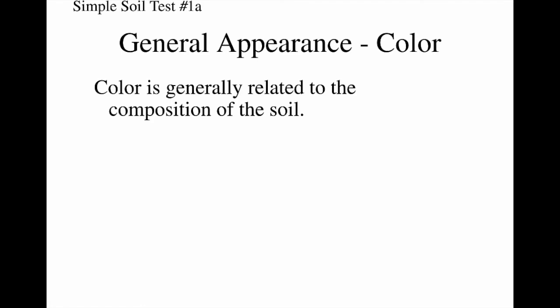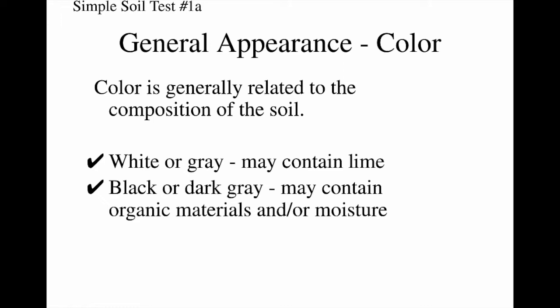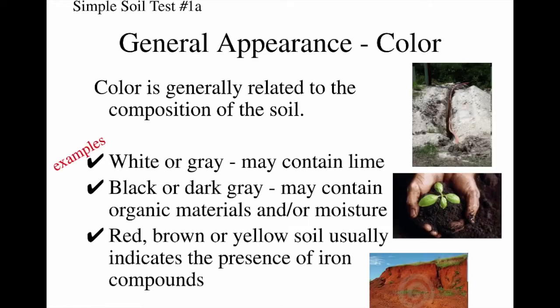The first thing we look at with soil is just the color. The color of soil is generally related to its composition — what it's made up of. For instance, if we have soil that is white or gray, it may contain lime. If it's black or dark gray, it may contain a larger amount of organic materials, or it could be wet. Soil that's red, brown, or yellow usually means it has a higher concentration of iron compounds. Here are some examples of different soils and what we can learn just from looking at them.